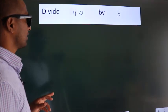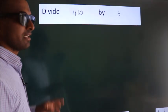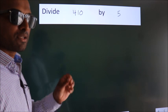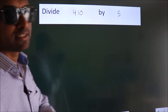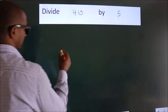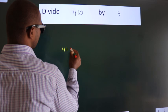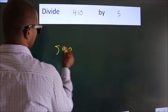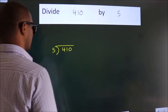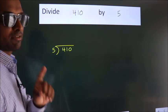Divide 410 by 5. To do this division, we should frame it in this way. 410 here, 5 here. This is your step 1.